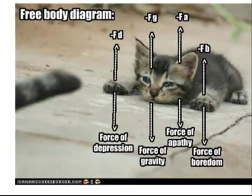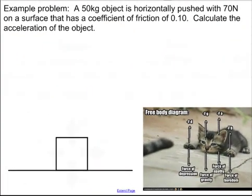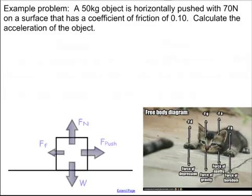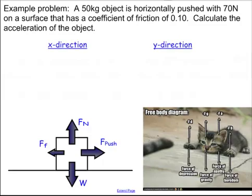Let's do an example problem. We have a 50-kilogram object pushed horizontally with 70 newtons on a surface with a coefficient of friction of 0.10, and we want to calculate the acceleration. The first thing we do is draw a free body diagram: weight going down, normal force going up, pushing force horizontal, and frictional force opposing motion. Just like with projectile problems, we split this into x and y directions — we can't mix those.